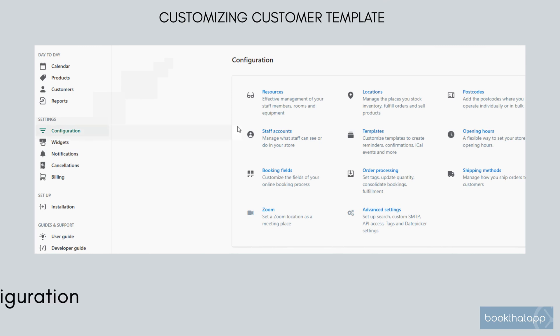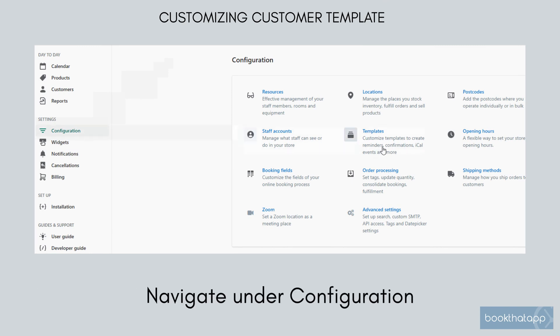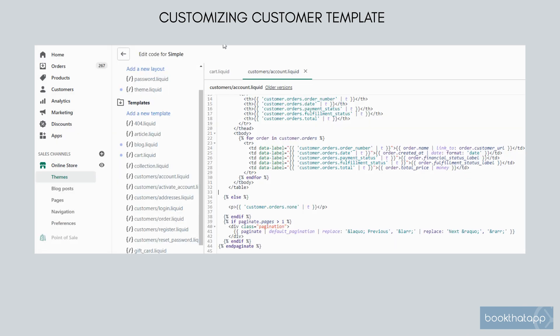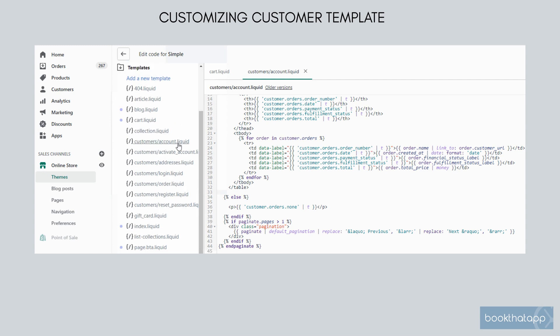Customizing the customer template. Navigate under Configuration, then Templates, then Customer. Copy the code, then go to your theme backend in Shopify. Locate the file typically under Templates, Customer Account, and paste the code within the file then save it.